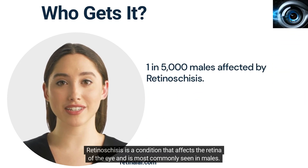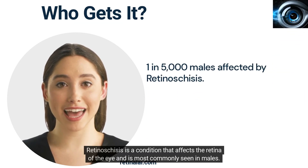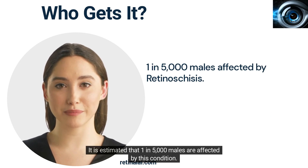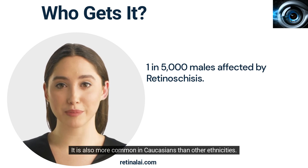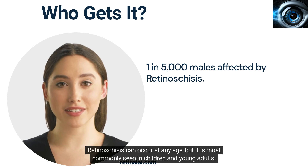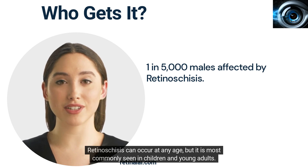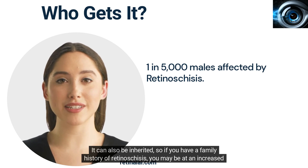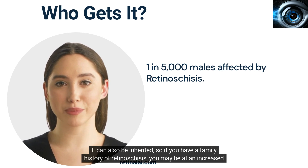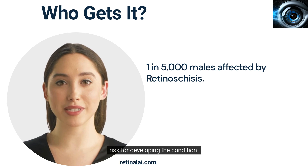Retinosteces is a condition that affects the retina of the eye and is most commonly seen in males. It is estimated that 1 in 5000 males are affected by this condition. It is also more common in Caucasians than other ethnicities. Retinosteces can occur at any age, but it is most commonly seen in children and young adults. It can also be inherited, so if you have a family history of Retinosteces, you may be at an increased risk for developing the condition.